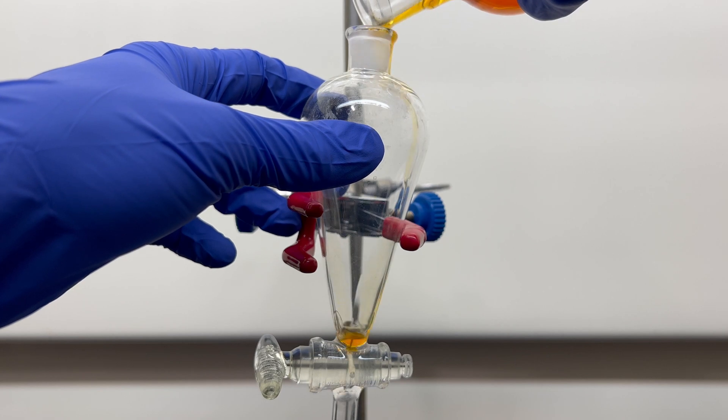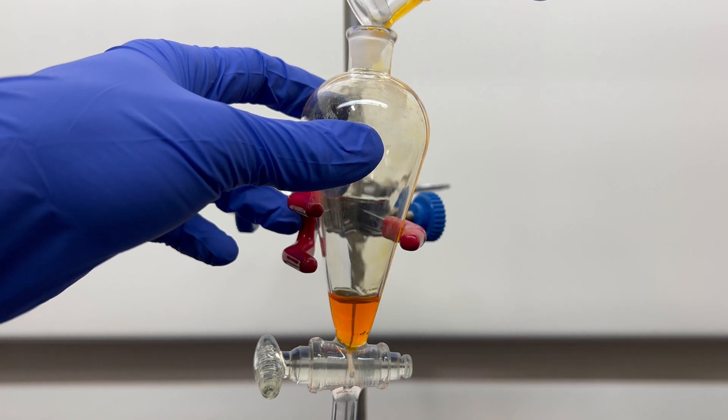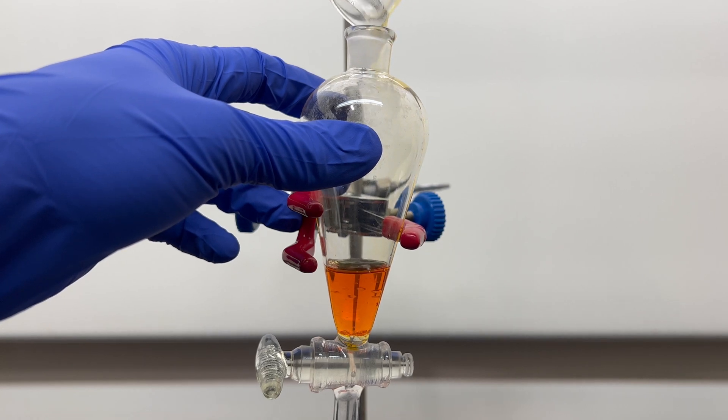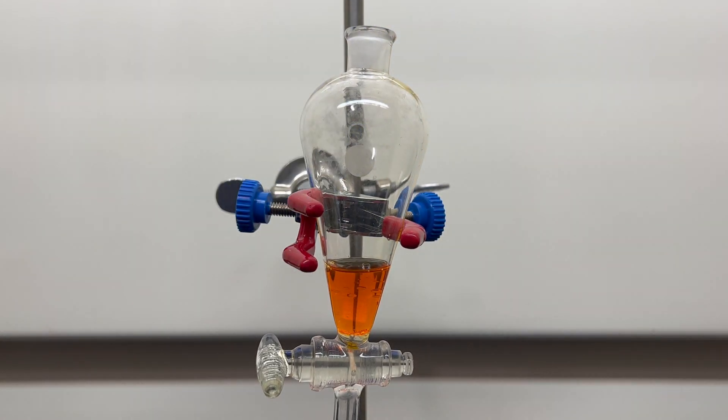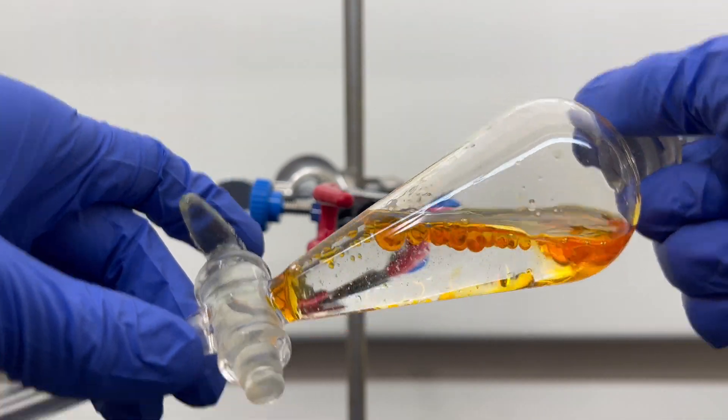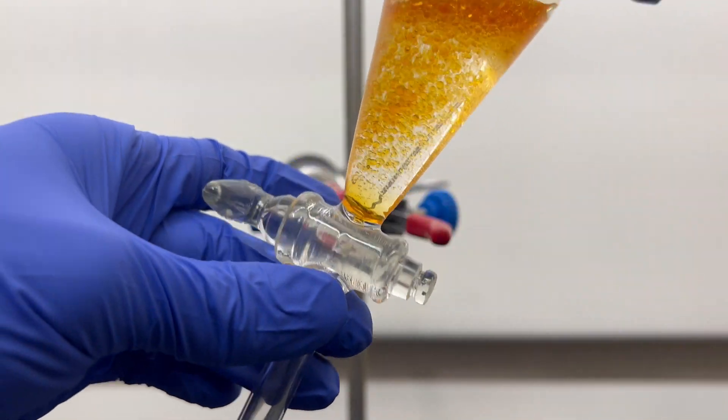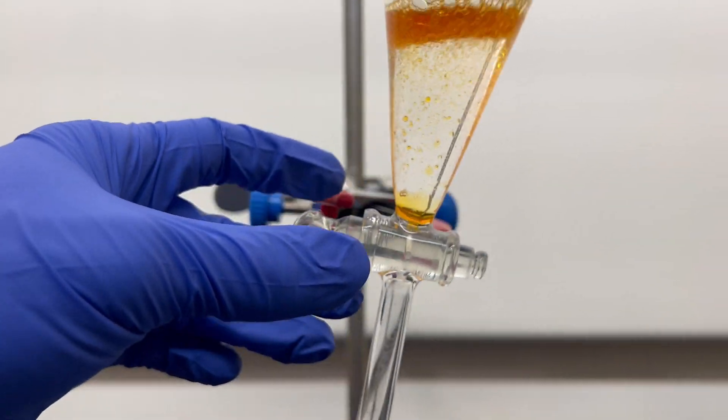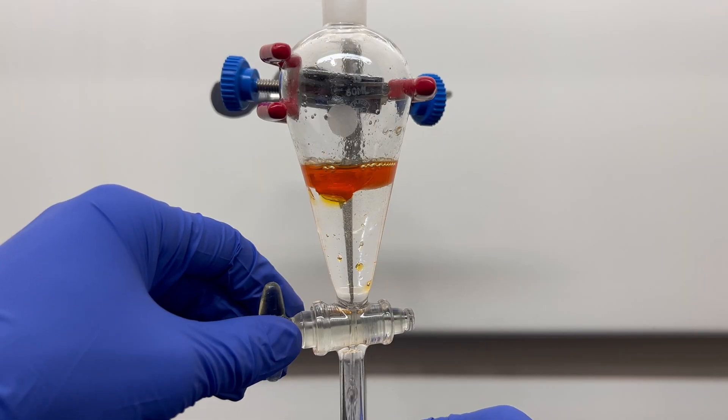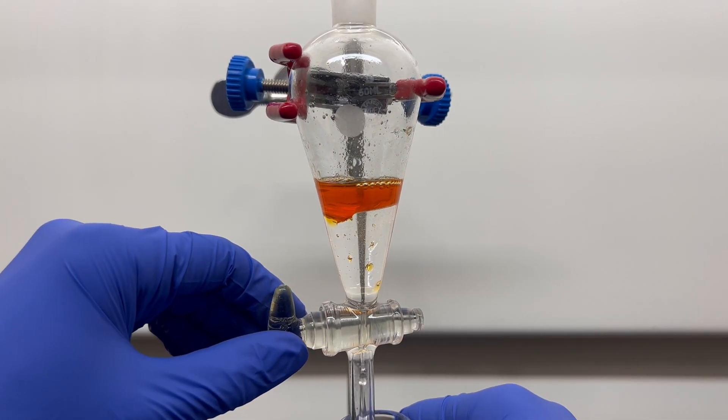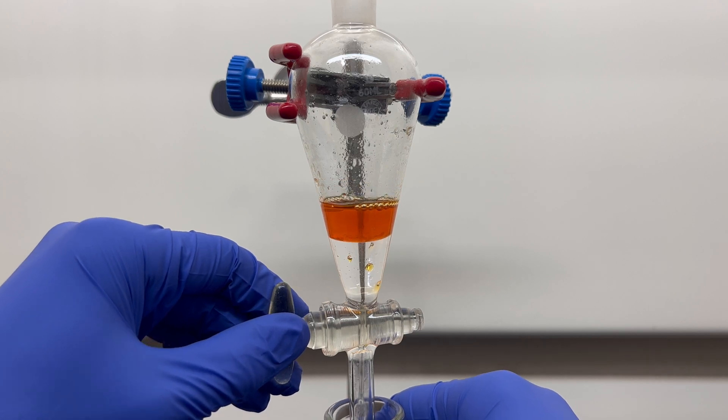The dirty liquid is then transferred to a separatory funnel to separate the water from the benzene. The benzene has a density of 0.88 grams per milliliter, so it's our top layer. We drain the water into a flask and the benzene into another. This step also serves to remove any water-soluble impurities.